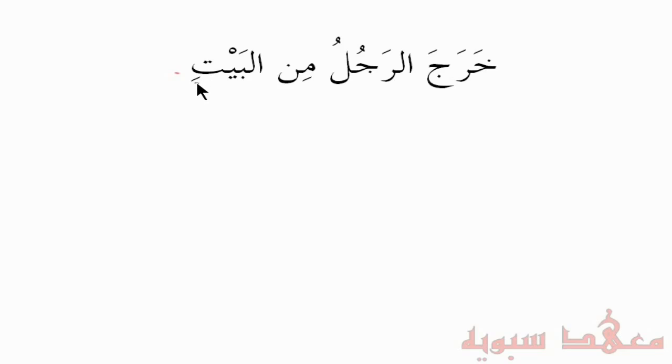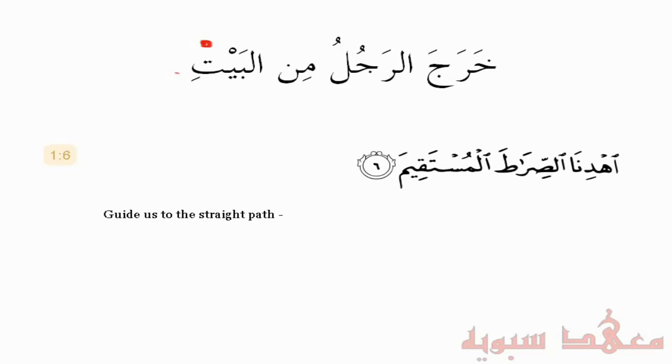Now I also want to mention this sentence: 'Kharaj al-rajl min al-bayti' — and you stop there. Notice the last letter has a kasra, but when we actually stop, we give it a Sukun. There's no Sukun written down, but we pronounce it as if there was a Sukun. For example, in the Qur'an — in Surah Al-Fatiha: 'Ihdina's-sirat al-mustaqeem' — it's 'mustaqeemah' with a fatha there, but we don't pronounce that fatha when we stop.